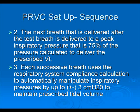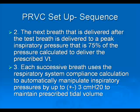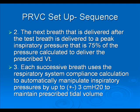It doesn't want to make large jumps in the pressure and overshoot, so it does 75% of that pressure. Then on the third step, each successive breath after the 75% breath uses the respiratory system compliance calculation to automatically manipulate the inspiratory pressures by up to plus or minus three centimeters of water to maintain the prescribed tidal volume. The ventilator is very careful and systematic in reaching the prescribed tidal volume by augmenting pressures on a step-by-step basis.